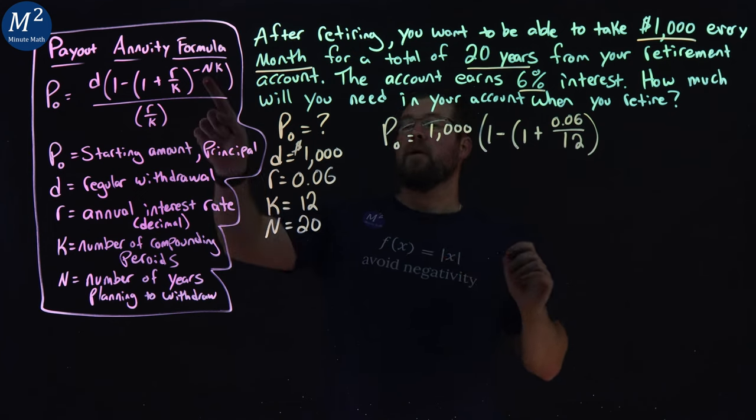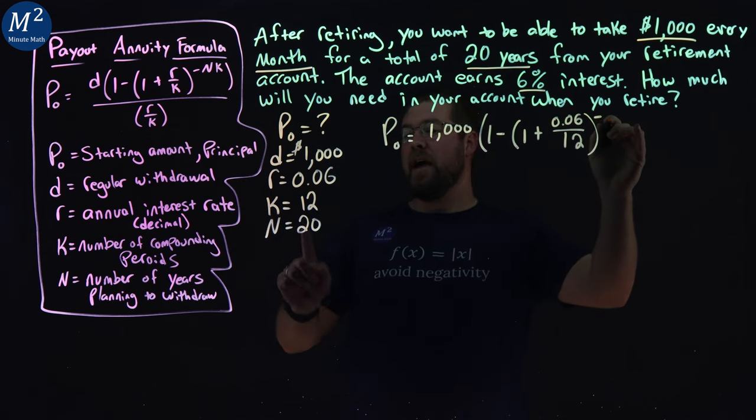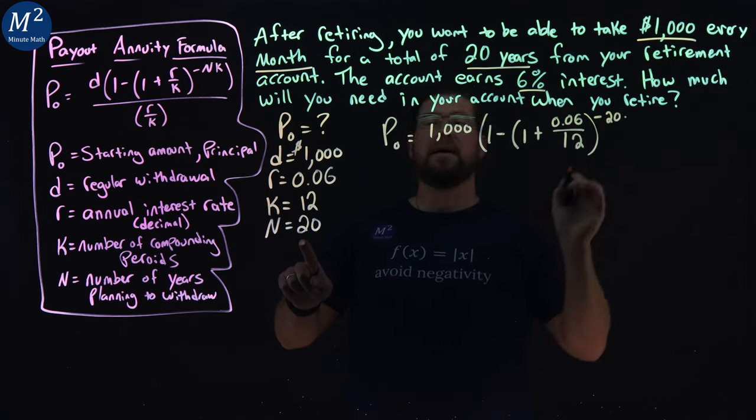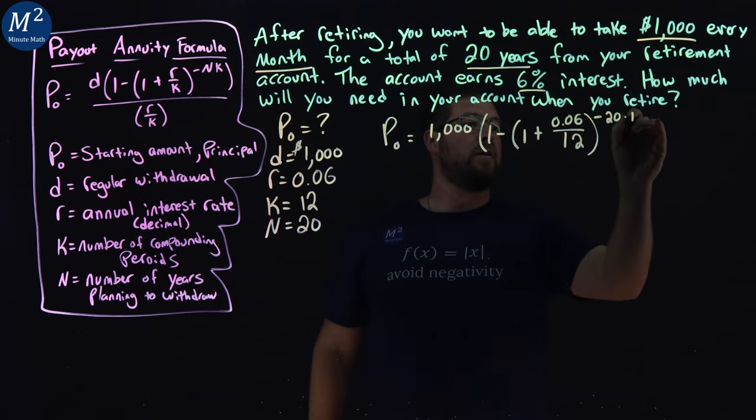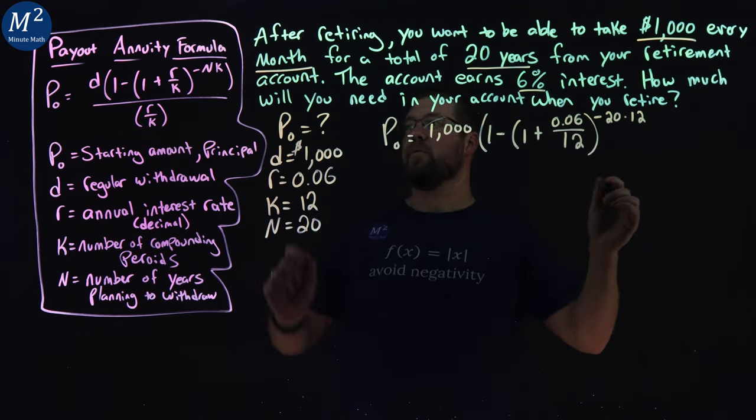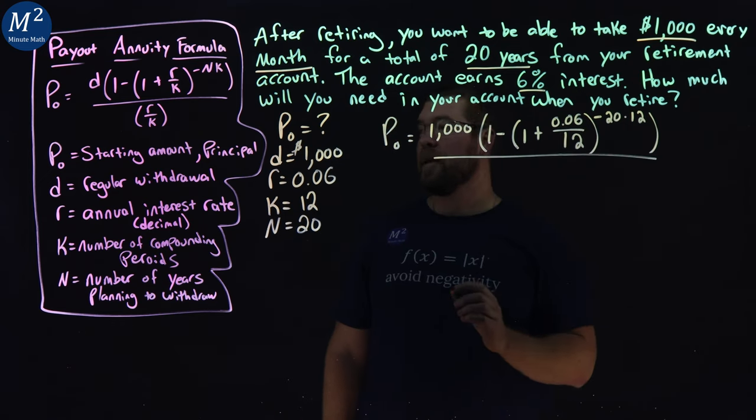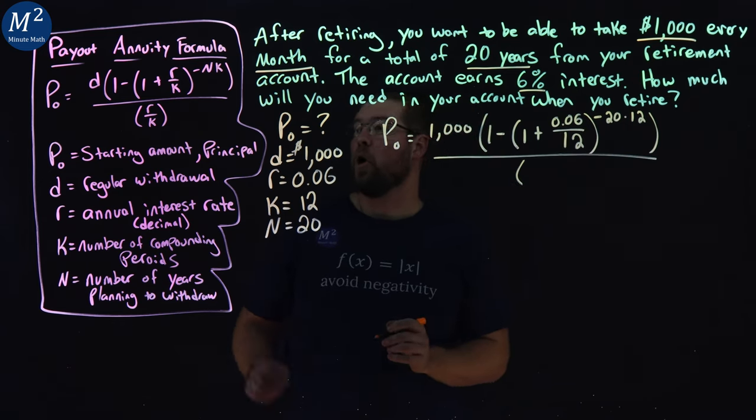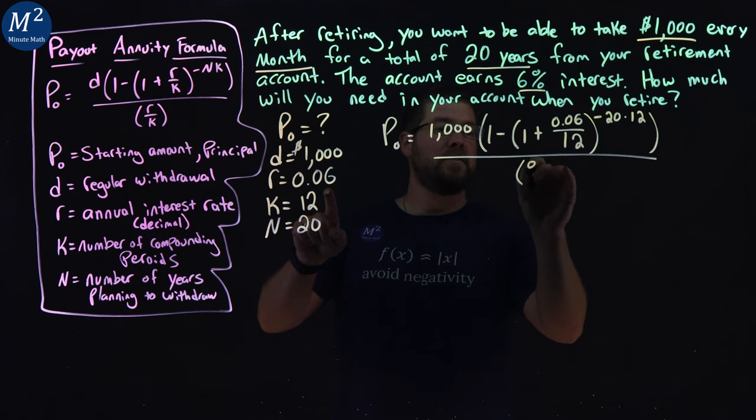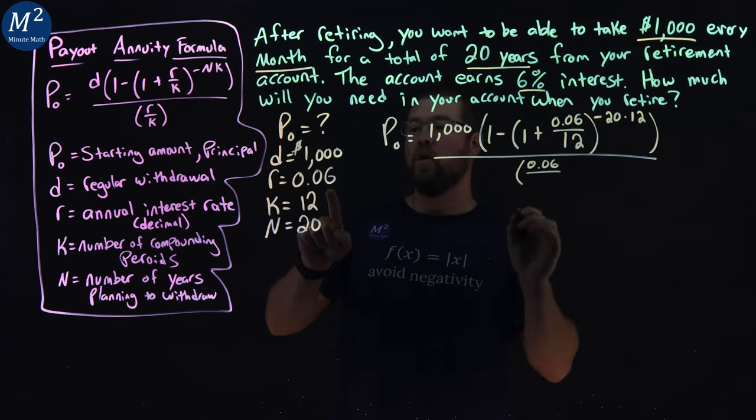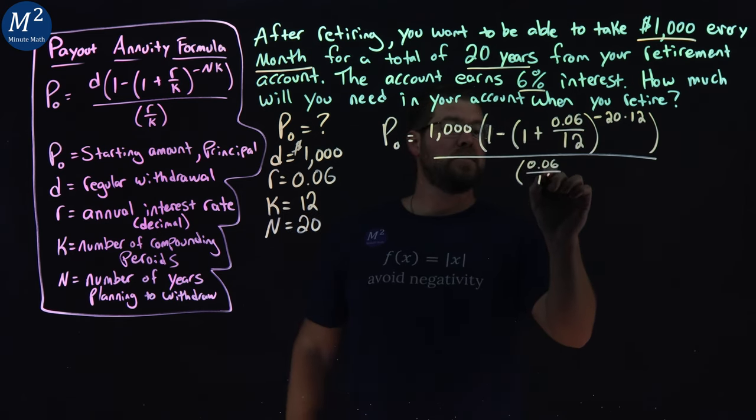And then that part is to the power of negative N being 20 times our K value, which is 12. And then we close the parenthesis. We're finished with the numerator. We go to the denominator here. And that's going to be R over K, our rate, 0.06, over our K value, which is 12.